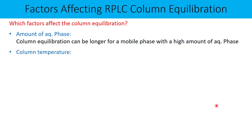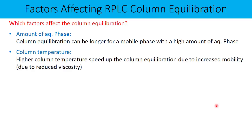The temperature of the column is also a factor. Higher column temperature speeds up column equilibration due to increased mobility of the mobile phase as its viscosity gets reduced. So if you want to achieve faster column equilibration, increase the column temperature above ambient temperature, maybe 30 or 40 degrees Celsius, and you will see a reduction in column equilibration time.